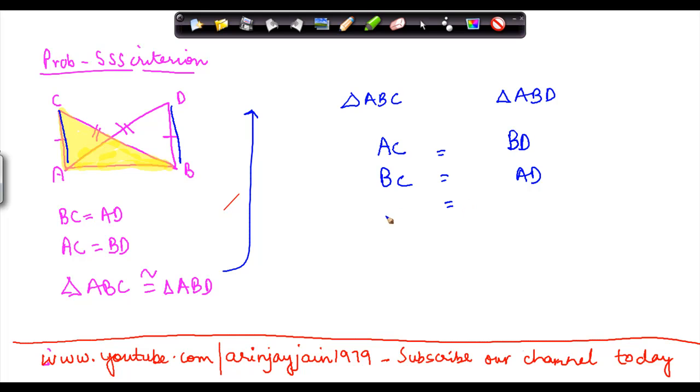And one fact which is clearly apparent here is that side AB, which is present in triangle ABC, which is this side considering this to be the triangle ABC, is also present in the second triangle.